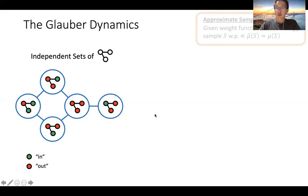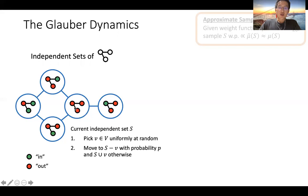Once you have a neighborhood relation, you can run random walks. You can think of this as a graph on all independent sets — an exponentially large graph. The Glauber dynamics works as follows: you start at some independent set S, pick a uniformly random vertex, and then re-sample the color of this vertex with some probability depending on what the colors of its neighbors are.